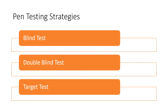Just like a real hacker attempt, the testing team is provided with only limited or no information concerning the organization prior to conducting this test. Double blind testing is an extension of the blind testing strategy. In this exercise, the organization's IT and security staff are not notified or informed beforehand and are blind to the planned testing activities.